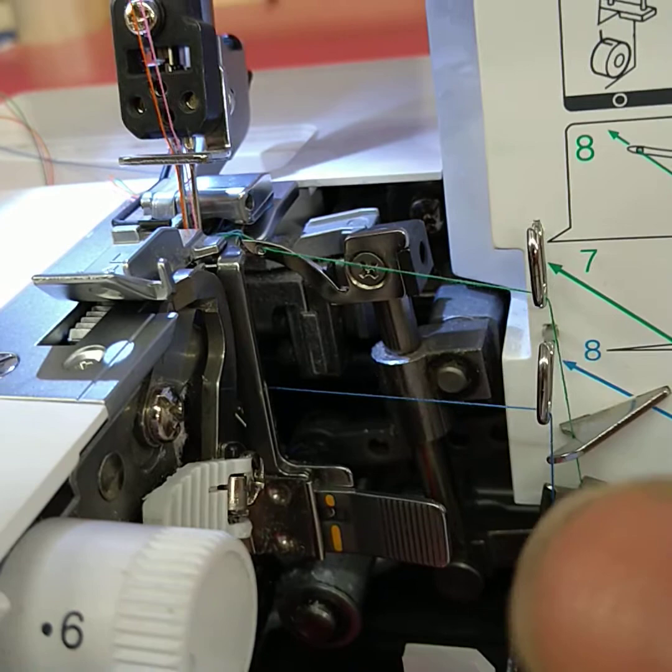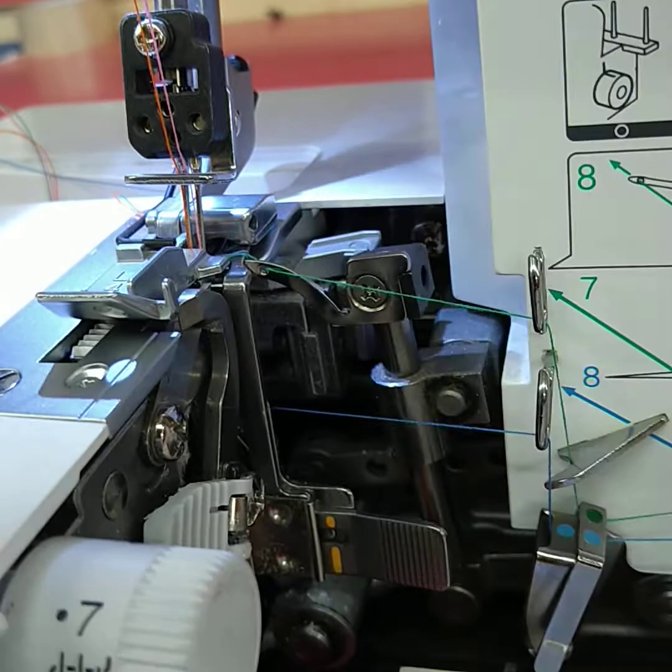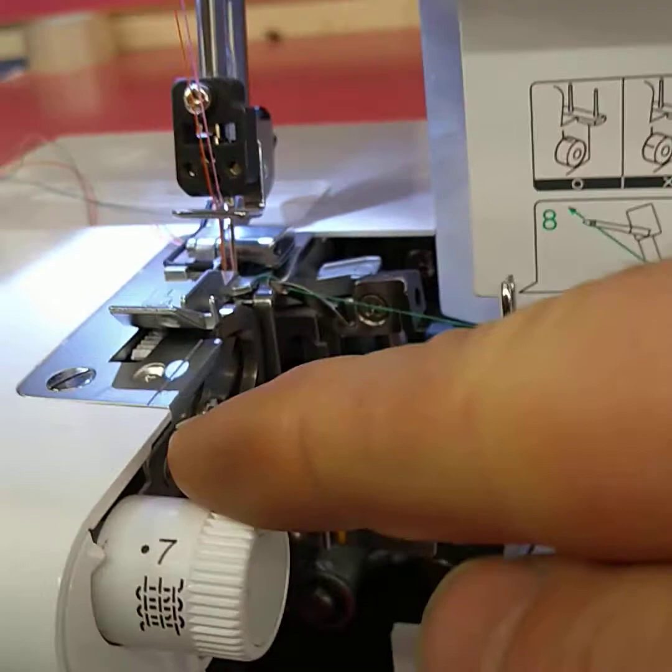Important with Brother overlockers, the stitch finger moves with the blade, so you don't get as much overhang with Brother overlockers as you do with some other machines. So that's the stitch width.